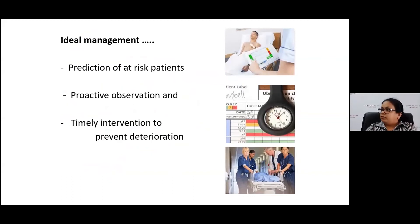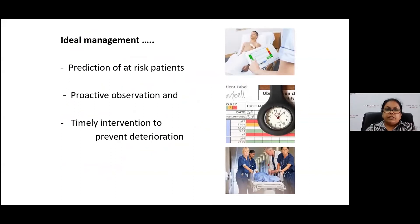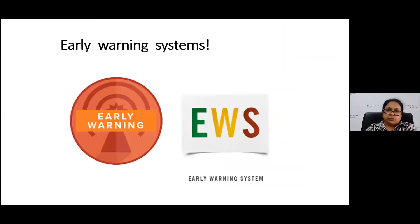The ideal management is to spot, identify, and predict patients who are likely to deteriorate — those at risk. We need to identify this group and proactively observe them frequently to identify deterioration at an early stage. This will help clinicians to timely intervene and prevent adverse outcomes like peri-arrest, cardiac arrest, death, and even prevention of an ICU admission. This is where early warning scoring systems come in.